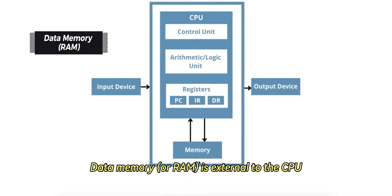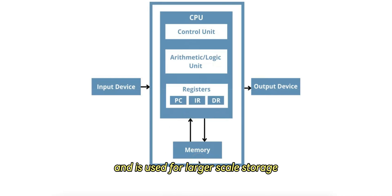Data memory, or RAM, is external to the CPU and is used for larger-scale storage that holds programs and data the CPU accesses over time.